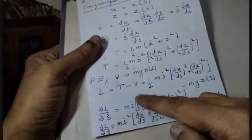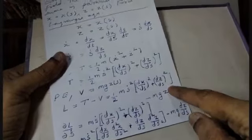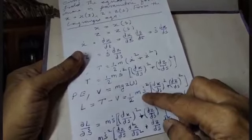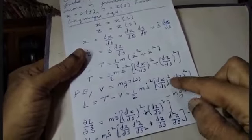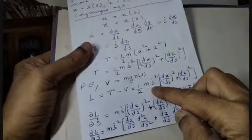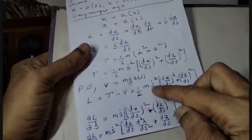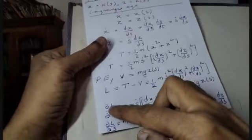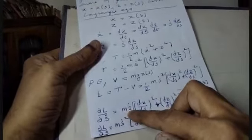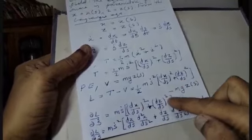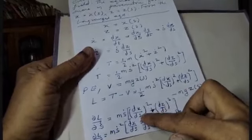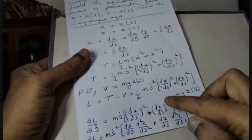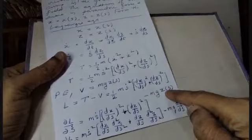Computing ∂L/∂ṡ: differentiating with respect to ṡ, we get ∂L/∂ṡ equals mṡ times [(dx/ds)² + (dz/ds)²], since the potential energy term does not depend on ṡ.